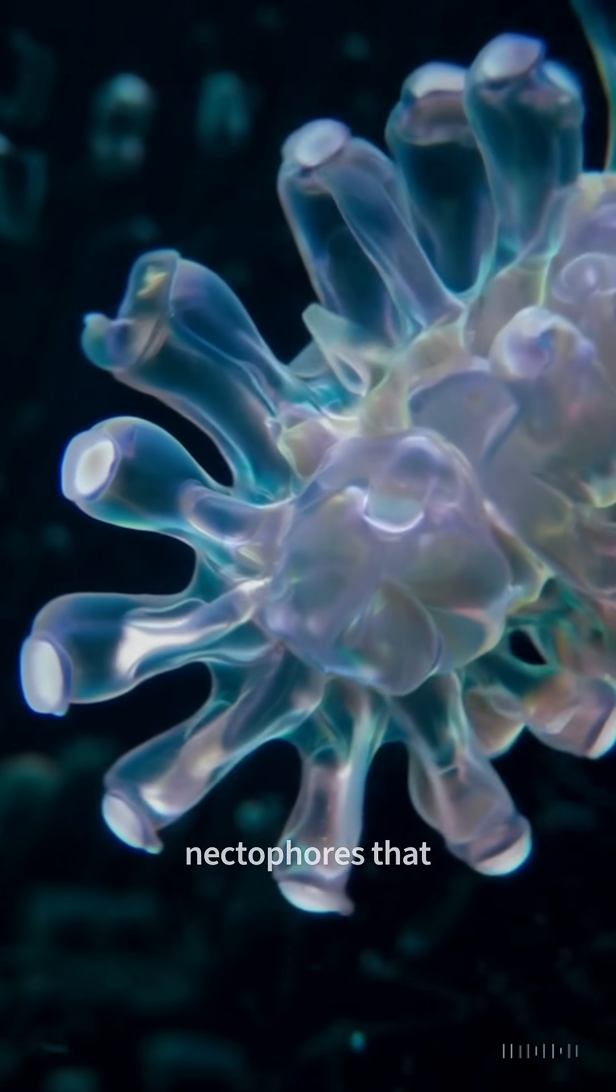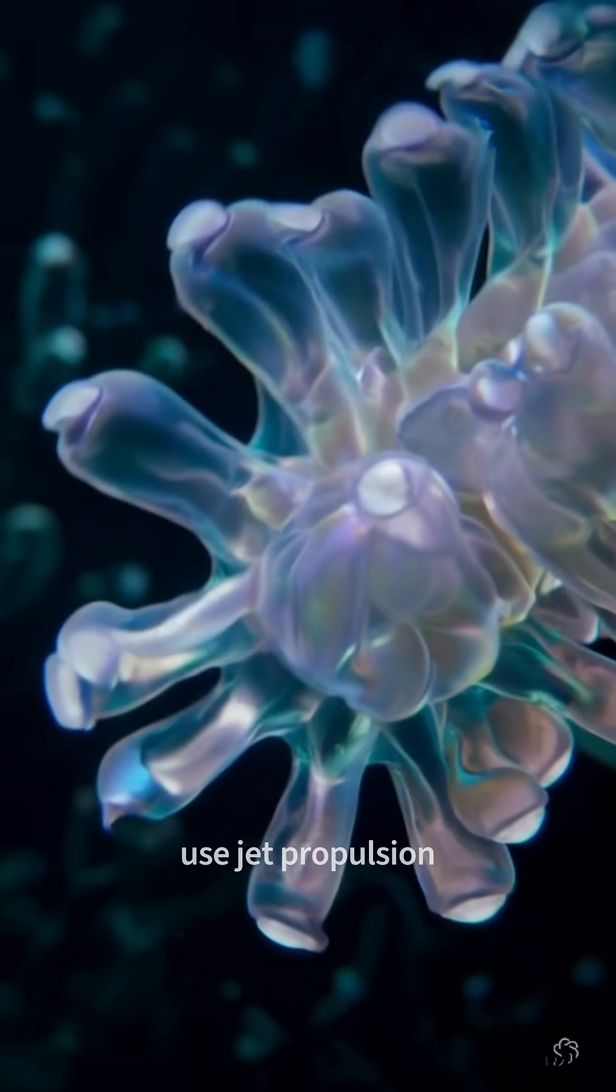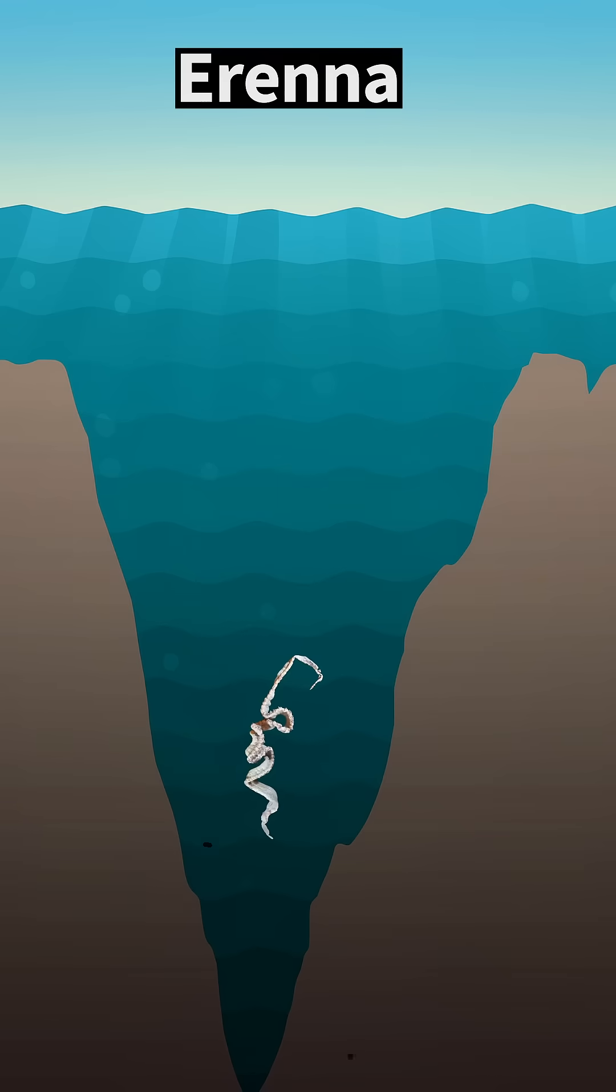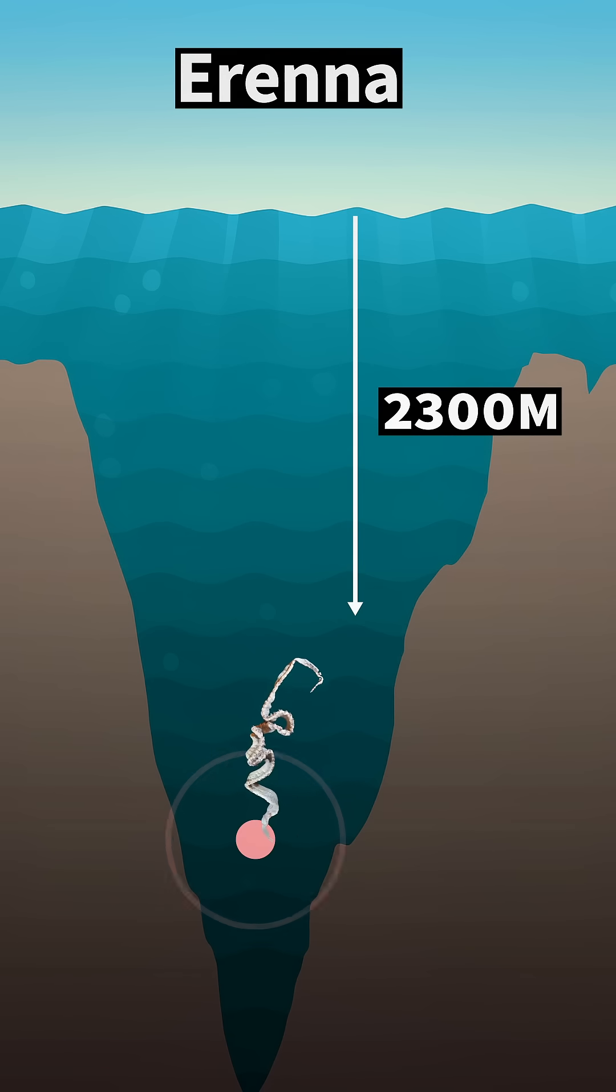Below it, colonies wield nectophores that use jet propulsion by expelling water through vellum-equipped bells. A species named Erena, found up to 2,300 meters deep, produces red bioluminescence to attract fish.